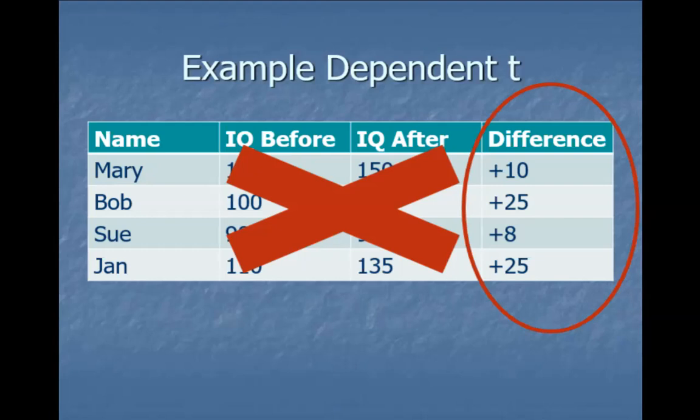Now consider: let's say vitamin K did nothing — it didn't improve IQ or hurt IQ. What do we expect the average difference to be if vitamin K does nothing at all? If vitamin K does nothing, we would expect this difference to be roughly zero.